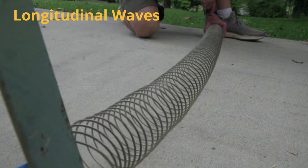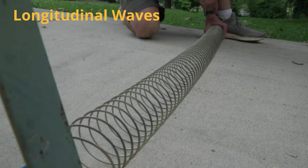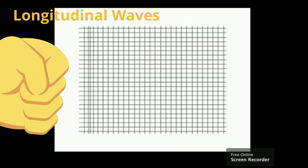Longitudinal waves are waves in which the displacement of the medium is in the same direction as the direction of the propagation, or the movement of the wave.